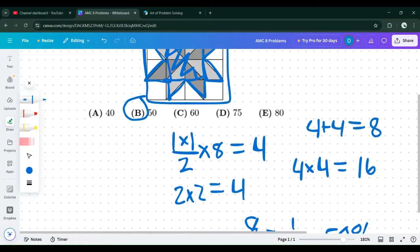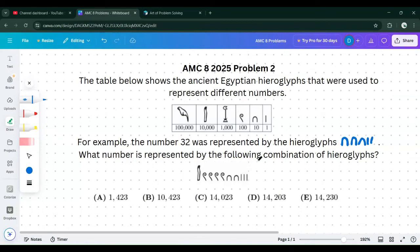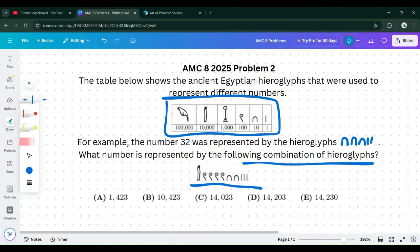Now we're going to move on to problem two. We are presented with a combination of hieroglyphics. We have a table showing what each hieroglyphic is worth. We're going to start with the largest on the left. The largest is this eye-looking thing, and it's worth $10,000.